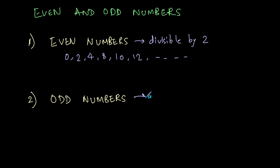And odd numbers are those numbers which are not divisible by 2. So these numbers are 1, 3, 5, 7, 9, and so on.